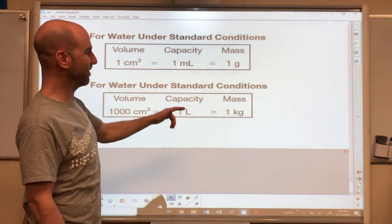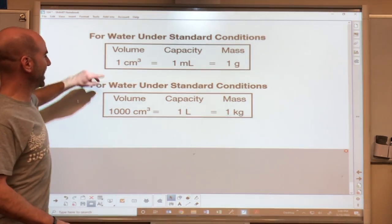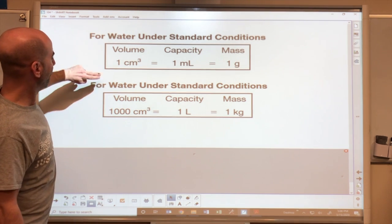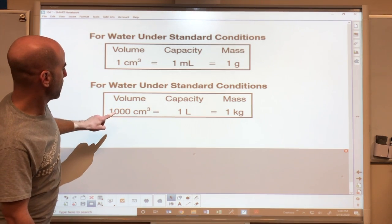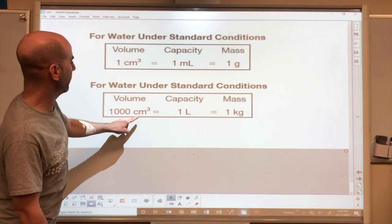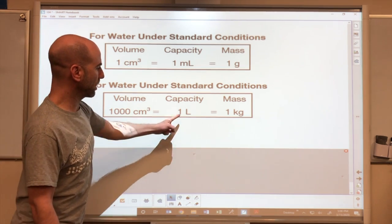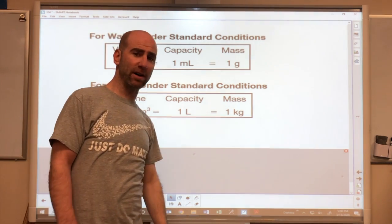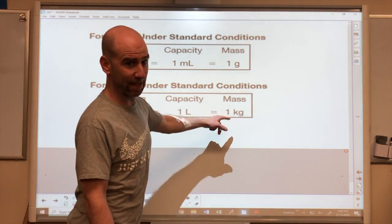Also copy this down. The difference is we have 1000 cubic centimeters of water. That's one liter of water, and that's one kilogram.